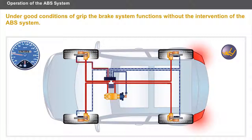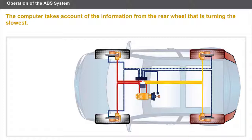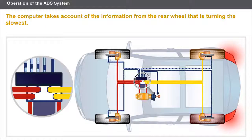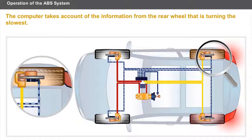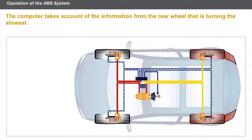The front wheel solenoids are controlled separately, while the solenoids for the rear are controlled simultaneously. The rear axle must be braked using a force which is lower than the force used for the front axle. The computer uses the electronic brake distributor logic to do this, taking account of the information from the rear wheel that is turning the slowest. This computer function is called Select Low.